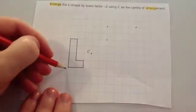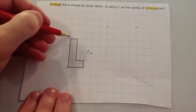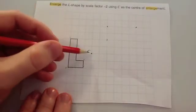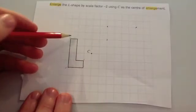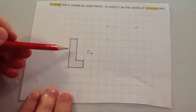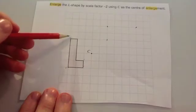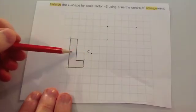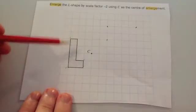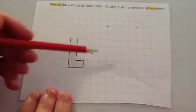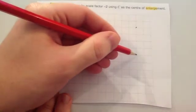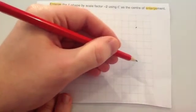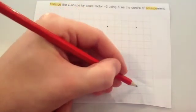We've done that point. Now let's do this one: it's 3 to the left and 2 up. So instead of going 3 to the left and 2 up, we're going to double it and go the other way — 6 to the right and 4 down.